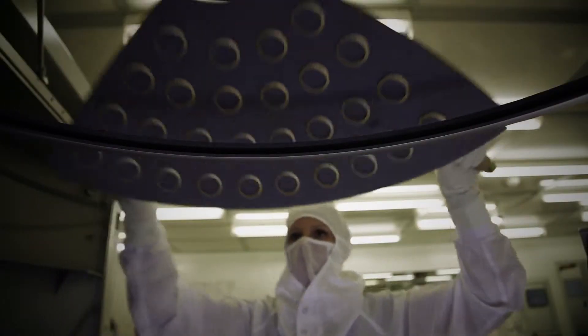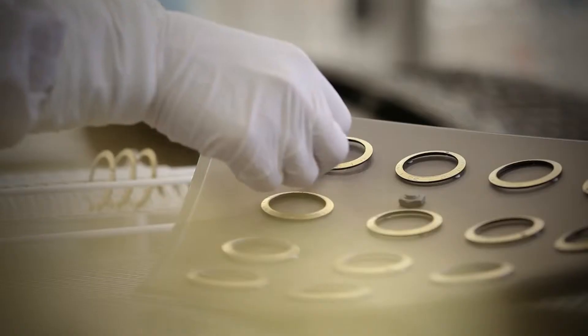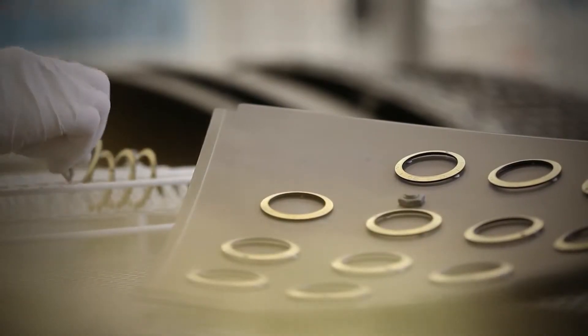In a clean room, a conductive layer is deposited on the top surface and in the engraved cavities. This allows the growth of a gold layer during the electroforming process.